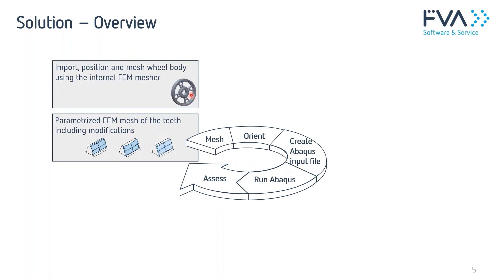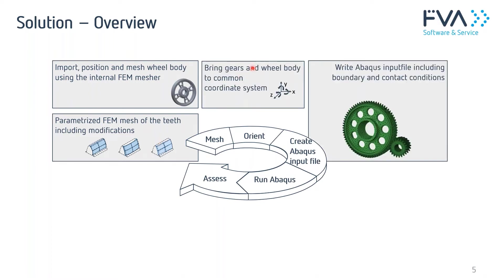The wheel body may be of arbitrarily complex shape and is imported as a CAD body. What you construct can be imported and combined with the teeth. It is positioned and meshed with our internal FEM mesher, cut in the radial direction to fit the teeth, ensuring no gap or overlap of material between the gear body and the teeth. Both gears are brought together in a common coordinate system and the input file for the FE solver is written.